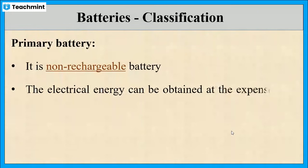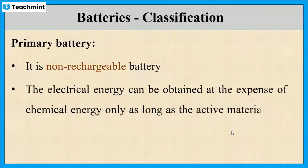If the active materials are not present, then electrical energy cannot be obtained. These active materials are chemical species involved in the electron transfer reaction.